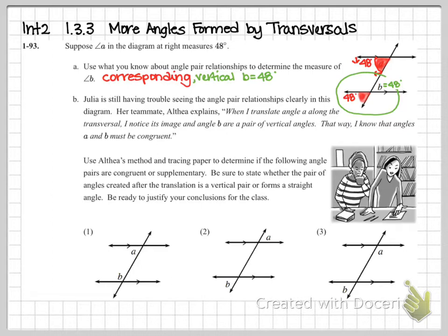We'll use tracing paper to see if the angles work out. Be sure to state your reasoning — these problems can be done in multiple ways. You can use vertical angles, corresponding angles, or supplementary angles to move around this picture. Go ahead and pause while I work on number one, then unpause to check the work.